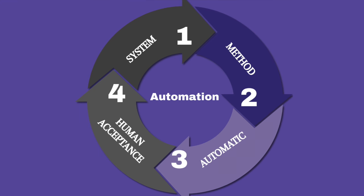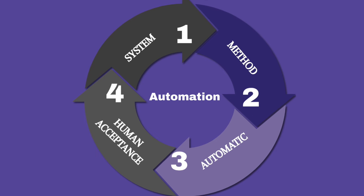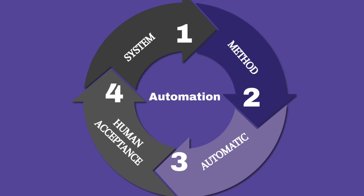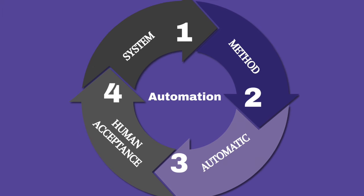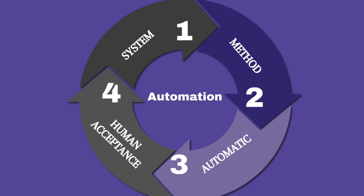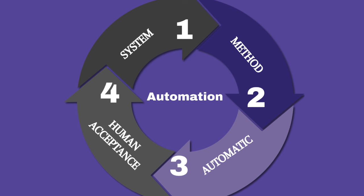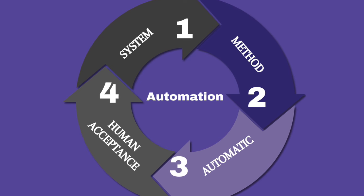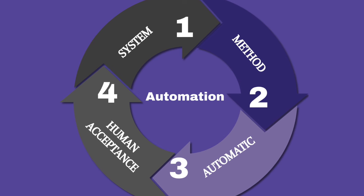Automation must meet the following criteria. First, it's a system — a program running on computer hardware. Second, it's a method: the program has a process of reading through unstructured text and identifying medical terminology and associating that terminology with a separate published medical coding system. Third, it's automatic: it performs a complicated task in the identification of terminology and the associated coding system. But does it meet the most important criteria? Human acceptance.